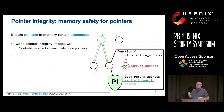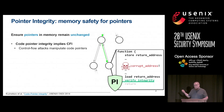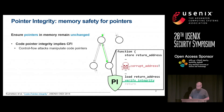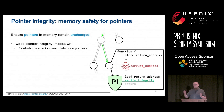As an example, we could consider return-oriented programming. In this case, the return address of a function will be written into memory where the attacker could potentially corrupt it and cause the program to return to an incorrect location. But if we could verify the integrity of the return address before this happens, we would prevent these types of attacks.